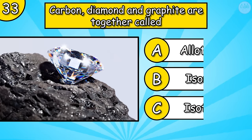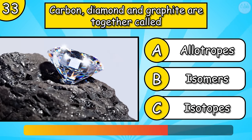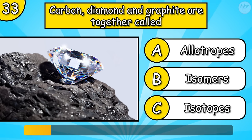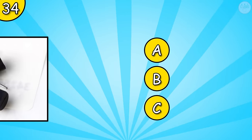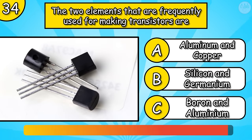Carbon, diamond and graphite are together called… The two elements that are frequently used for making transistors are…